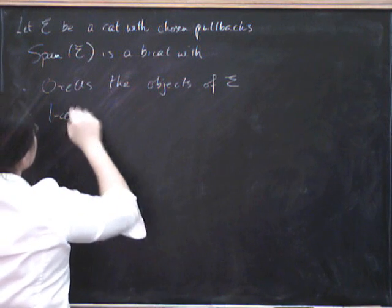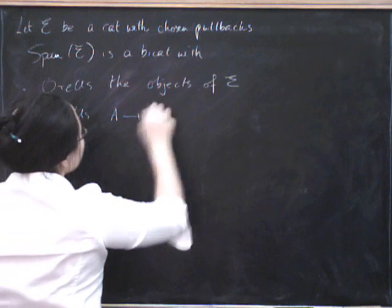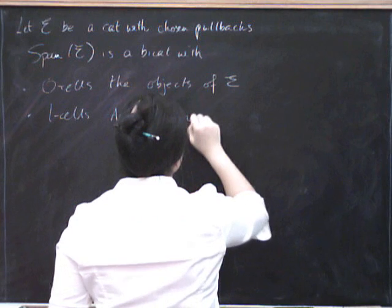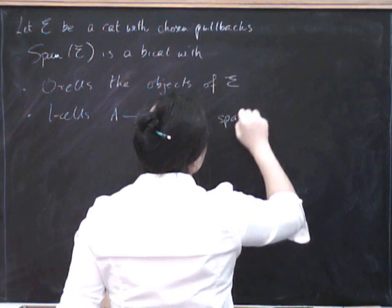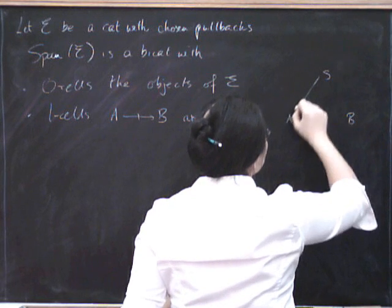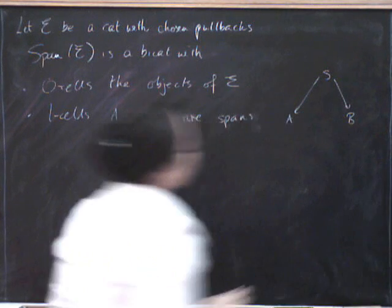The one cells from A to B, which I'm going to draw with a little line through them to remind us they're not actually morphisms in E, are spans. What's a span? Well, it's got two feet and it has another object up the top, so it's a diagram like that in E.